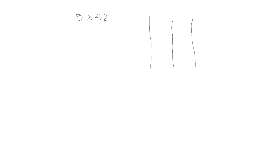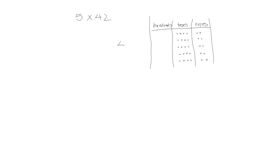Let's try another one: 5 times 42. Let's first show it in a place value chart. We're showing 42 which is 4 tens and 2 ones, and we're doing it 5 times. Writing it vertically as 42 times 5, we first look at our 1's, counting by 2's: 2, 4, 6, 8, 10.